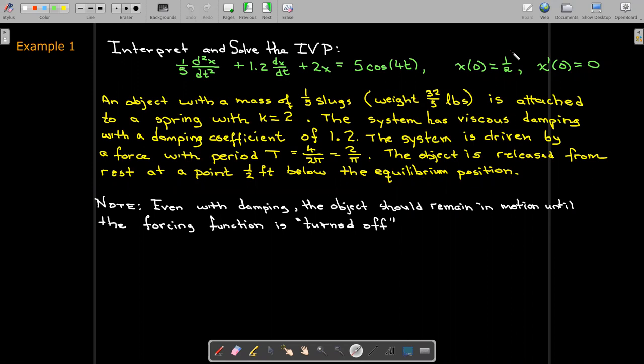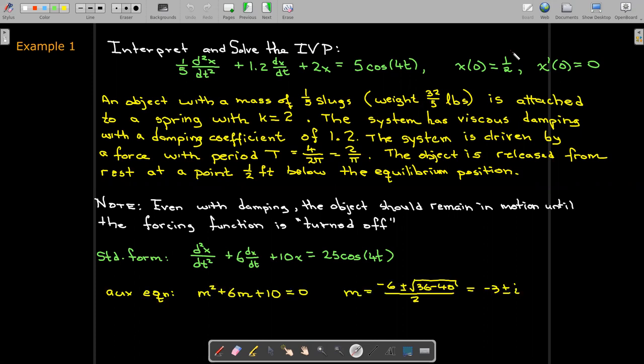So even with damping, we have this external forcing function, so the object is going to remain in motion until the forcing function is turned off. So let's go ahead and try to solve this. We'll write it in standard form. Take a look at our auxiliary equation, so we get complex conjugate roots. So we're going to expect to see oscillatory motion.